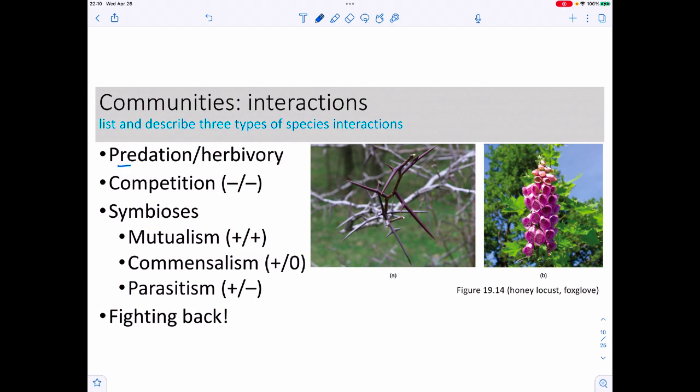Some interactions are predation or herbivory. Predation is animal on animal, herbivory is an animal eating a plant. We can have competition when different species fight for resources like access to trees or water. Competition is a negative-negative interaction, meaning both sides usually have some type of injury or waste their time. It's not a good phenomenon, even though it happens.